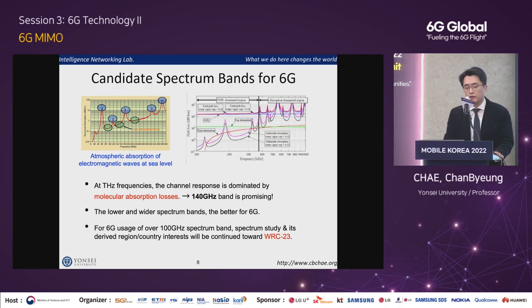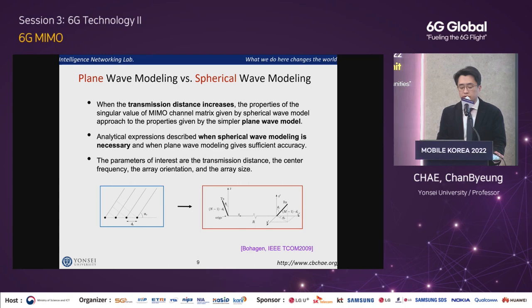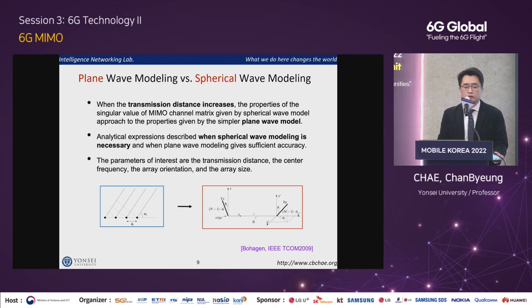Unlike the below-28 GHz spectrum, at terahertz frequencies the channel response is dominated by molecular absorption losses. From the figure, the 130 GHz to 140 GHz span is the most promising window. Of course, lower and wider spectrum is better for 6G. The challenge is that the higher the spectrum, the more severe the path loss, and eventually the shorter the communication distance.